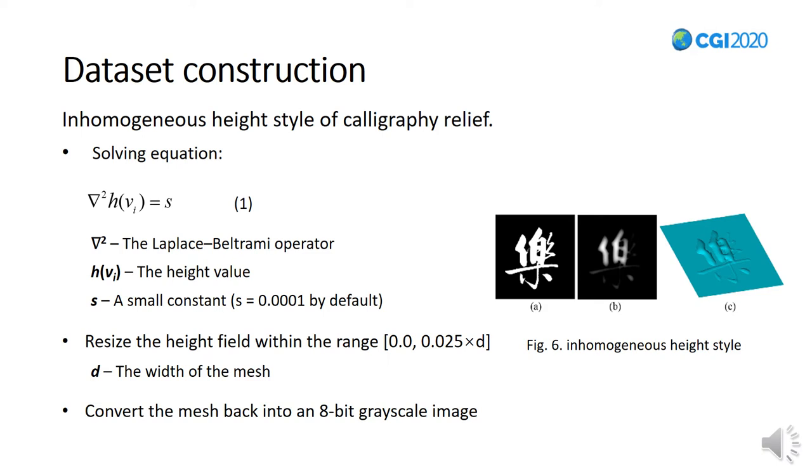Inhomogeneous style of relief is constructed through Laplacian-based surface inflation. For each input image, we first convert it into the form of a triangular mesh. Taking the background vertices as zero Dirichlet constraints, we inflate the font regions by solving Equation 1, then we resize the height field within a predefined depth. As shown in Figure 6, the background vertices remain fixed while the vertices inside the font have been inhomogeneously lifted.